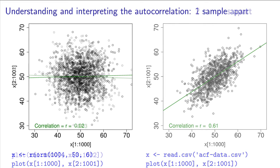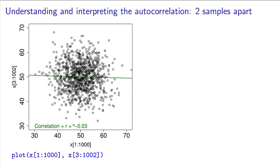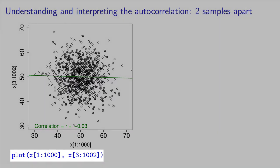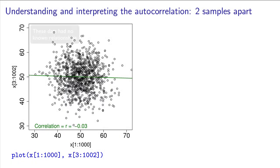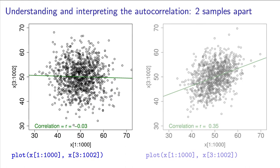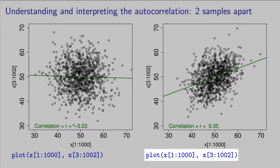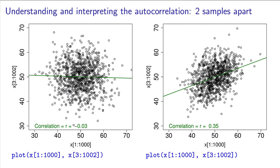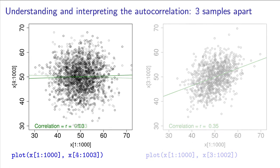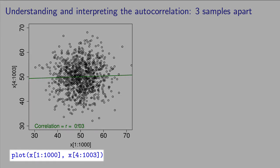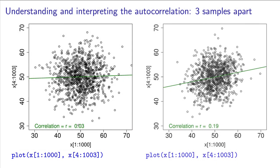Now let's repeat this process, but let's skip one sample value. Plot observations x1 up to a thousand on the horizontal axis, and plot observations x3, x4, x5 up to a thousand and two on the vertical axis. If the data truly have no relationship again, we should still observe a small correlation, as shown here on the left. But here on the right, we observe that a relationship is still present between every second value in the data: x1 and x3 are related, x2 and x4 are related, and so on. Notice that this time the correlation number is smaller than when we plotted the data one sample apart. We can repeat this yet another time, plotting the data three samples apart, then four samples apart. I start to notice that my correlation value on the right has dropped yet again and is now starting to be very small.